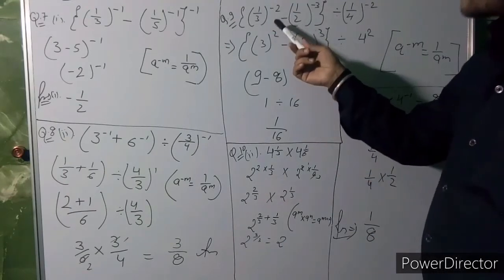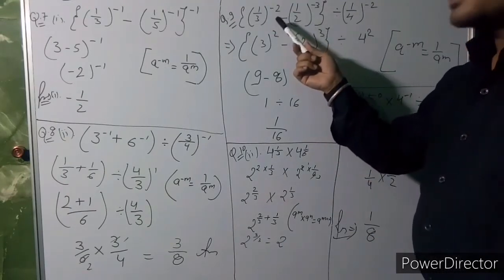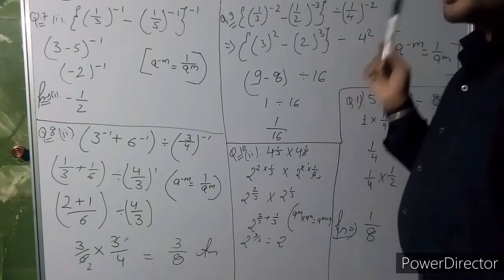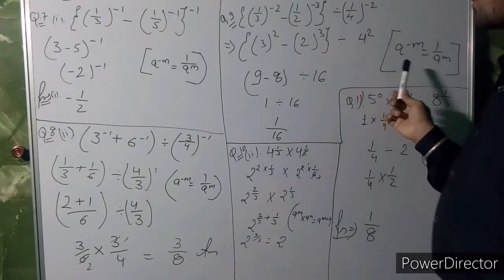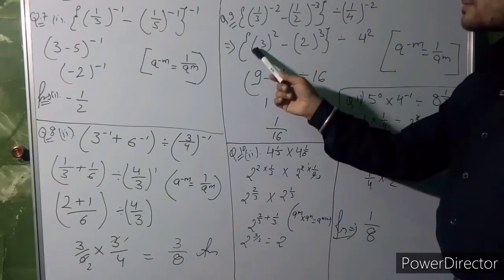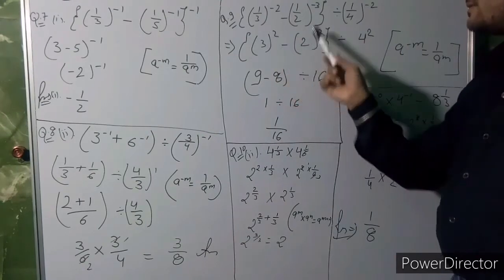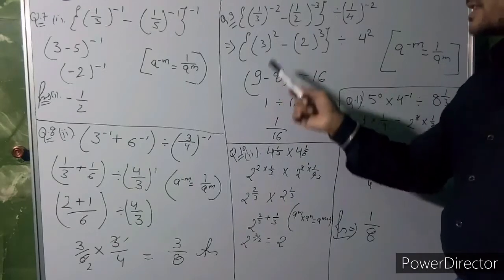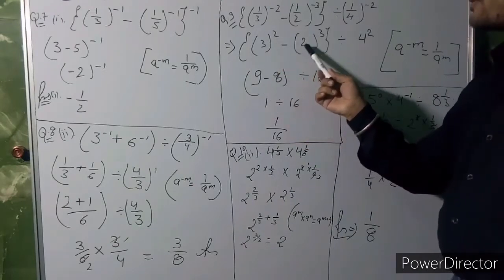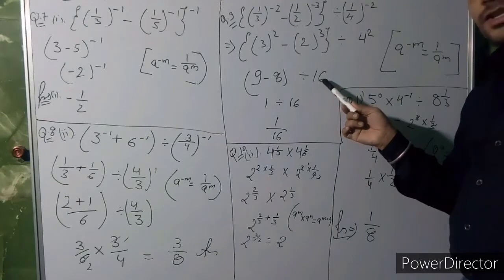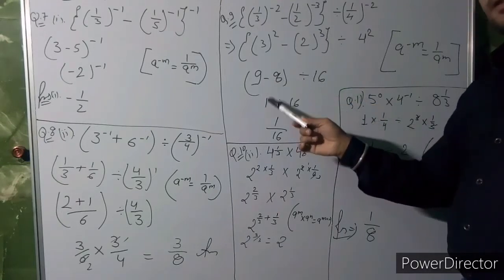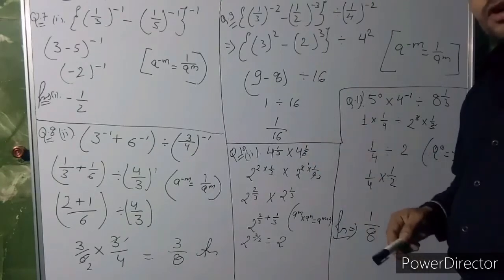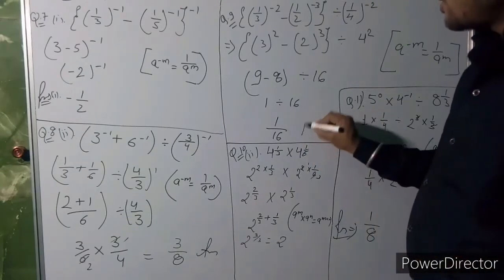Next question has negative powers: 2⁻³ and 4⁻². Using the same law, 1/3 becomes 3, 1/2 becomes 2, and 1/4 becomes 4. So 3² is 9, 4² is 16, and 2² is 4. Computing 9 minus 8 in the numerator gives 1, divided by 16, so the answer is 1 upon 16.